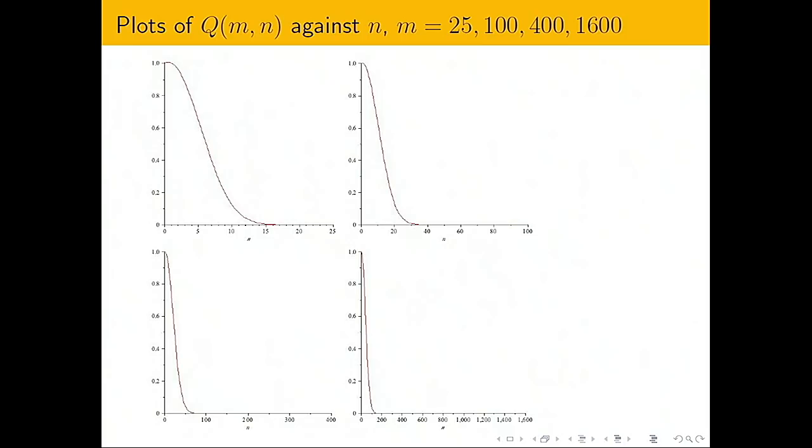What we see is that as M is multiplied by 4, that's M for Mike, this particular value that we're looking at doubles. So you multiply something by 4, some other quantity doubles always. That means that the second quantity is scaling like the square root of the first quantity. In other words, the point at which the probability of no collision becomes vanishingly small is growing like square root of the size of the table.